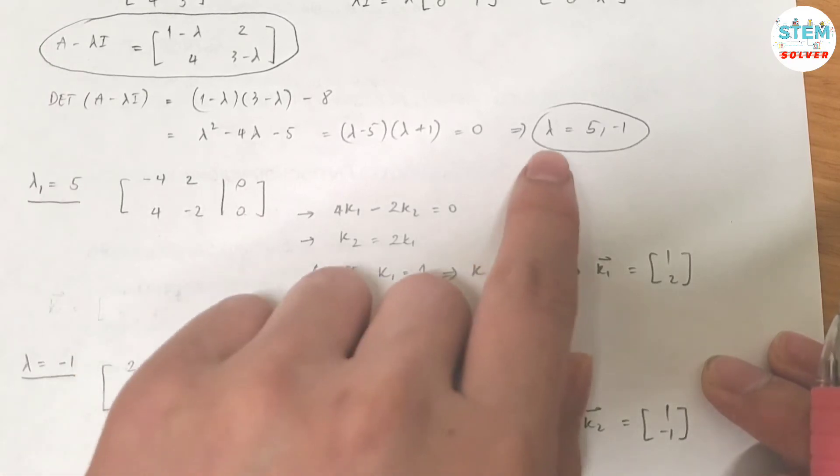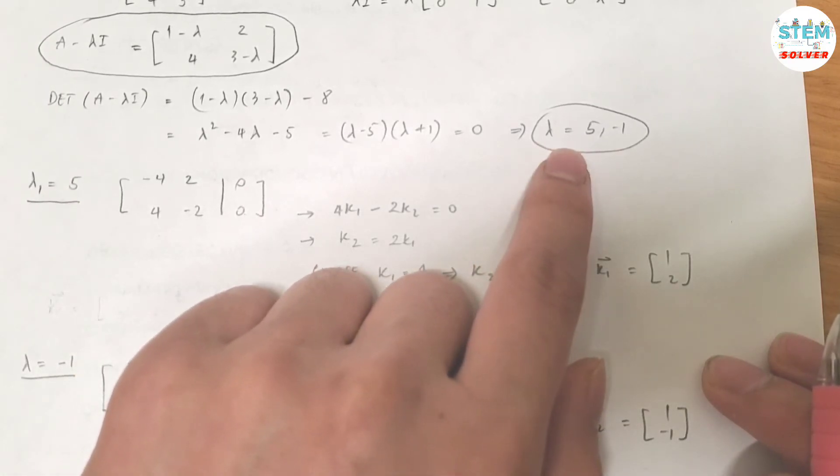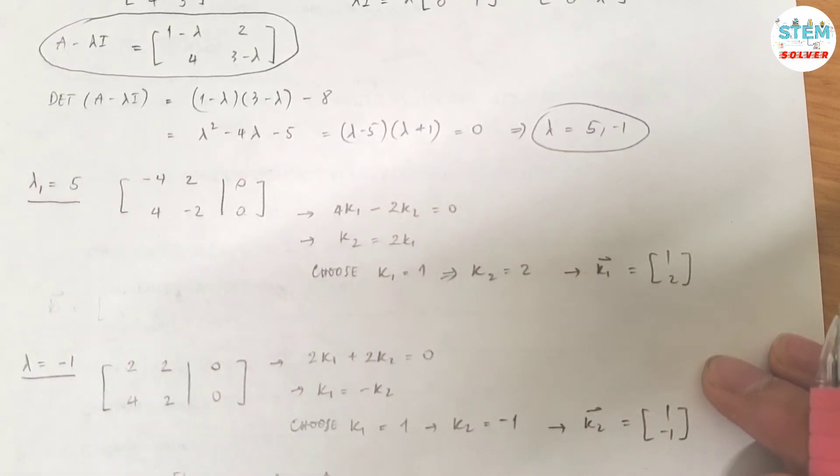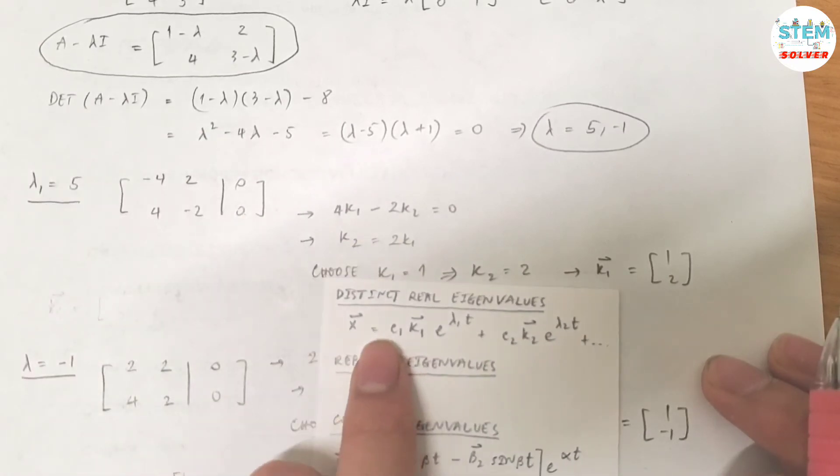Now, since you have distinct real eigenvalues for lambda, your final solution should be in this form. So let me move this up a little bit.